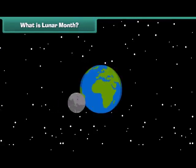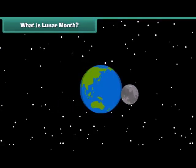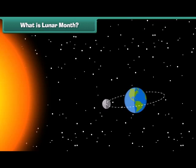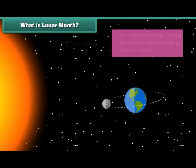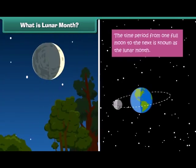The moon takes 27.3 days to orbit the earth, but the time from one full moon to the next is 29.5 days because earth is also constantly moving and orbiting the Sun. We call this period from one full moon to the next as the lunar month.